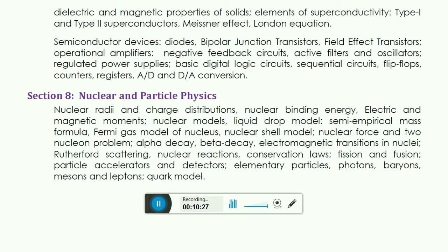The last section is nuclear and particle physics. This is the easiest topic of GATE's syllabus, equivalent to that classical mechanics topic. Classical mechanics is still a little tougher than this, but nuclear physics is quite easy, very easy. You should not miss this topic. Nuclear radii, charge distribution, nuclear binding energy, electric magnetic moments, nuclear models, nuclear drop model, semi-empirical mass formula, Fermi gas model of nucleus, nuclear shell model, nuclear force and two nucleon problem, alpha decay, beta decay, electromagnetic transitions in nuclei, Rutherford scattering, nuclear reactions, conservation laws, fission fusion, particle accelerators and detectors. These things are basically very easy, but you need to know certain things.